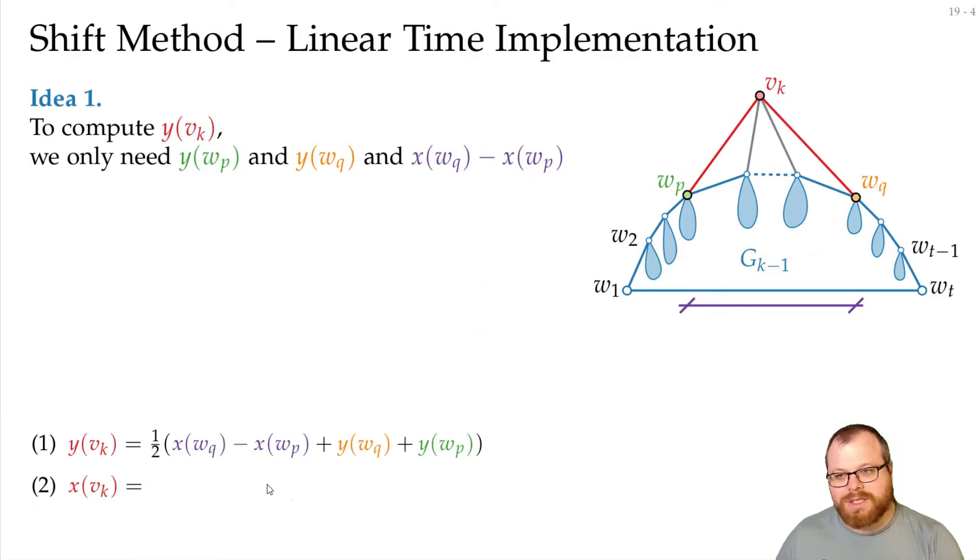However, if we want to calculate the x coordinate, then we actually need those coordinates we have. So we have to take half of the sum of the x coordinates plus the y distance between these two. But since we don't want to store x coordinates explicitly, but only distances, this is fine.